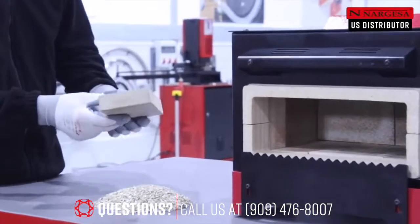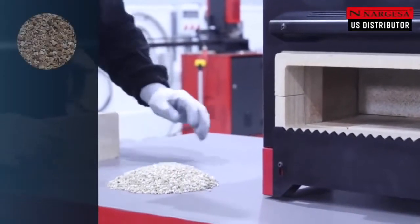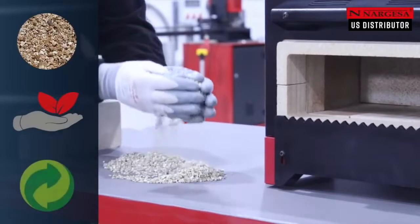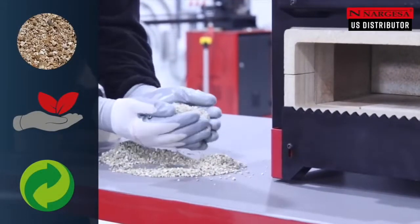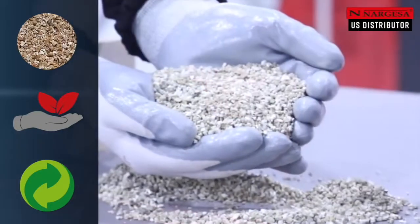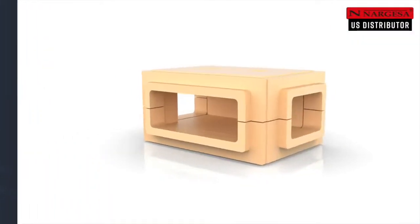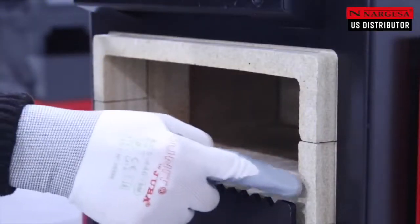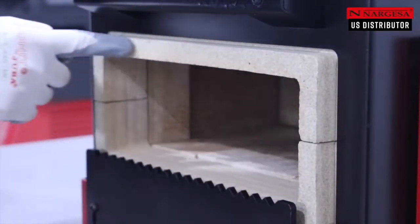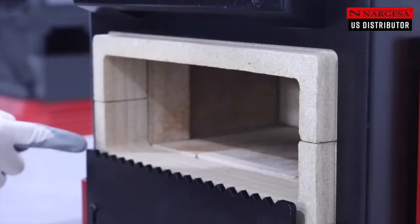The insulation of the combustion chamber is a 100% natural and 100% recyclable material. The compacted vermiculite, which is not harmful to health because it does not contain glass fibers or ceramics. Insulating edges in the entrances of the material keep the heat inside the combustion chamber.